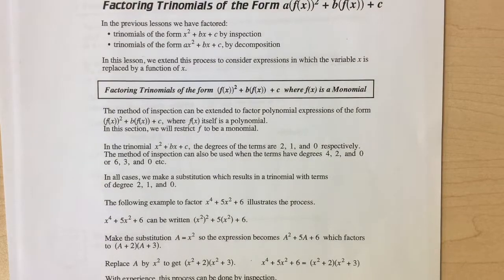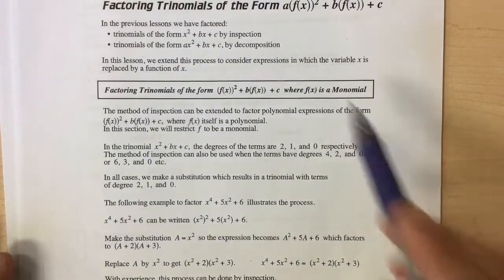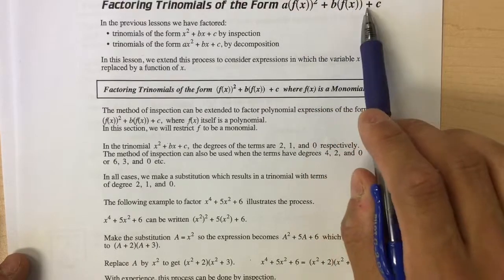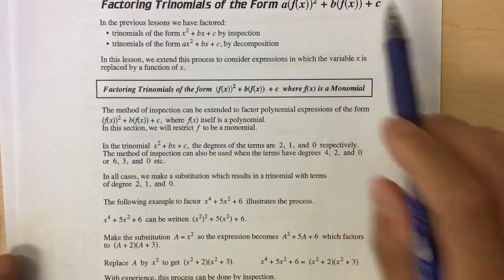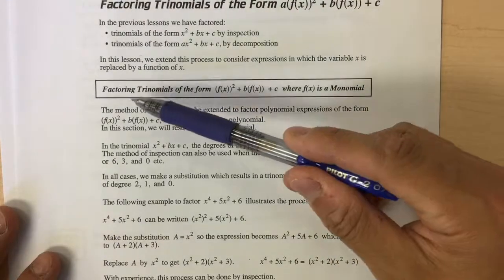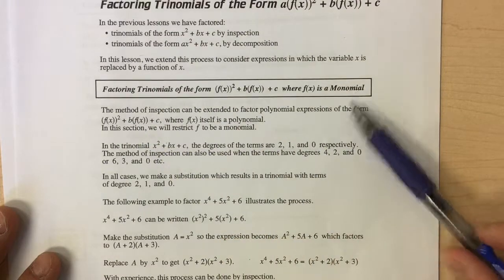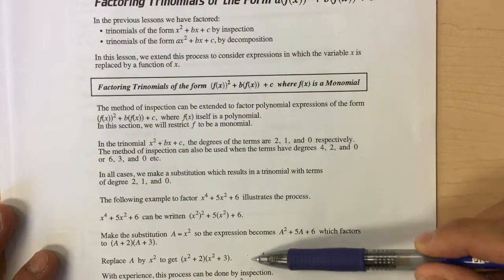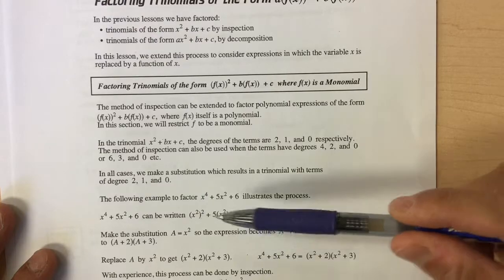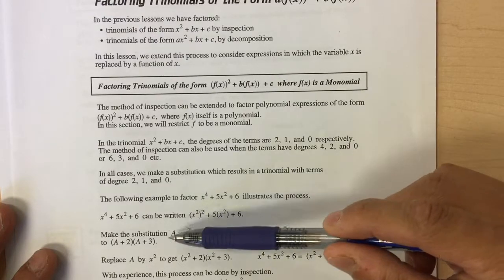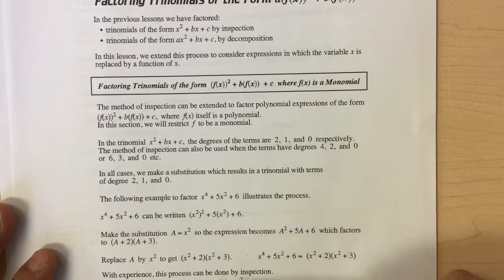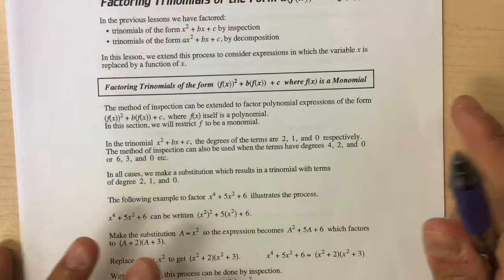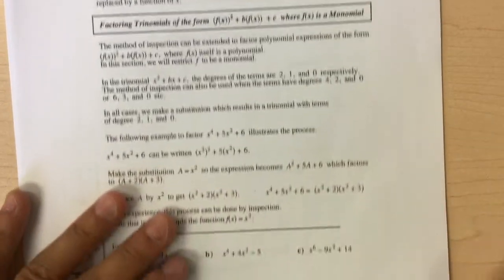Hey everyone, welcome to lesson number three: factoring trinomials of the form A times f(x) squared plus B times f(x) plus C. I'd encourage you to read these sections in your textbook, but I find if I read them in the video it kind of just takes a while. They describe the process I'm going to use in the examples anyway, so I'm just going to start by doing the examples.